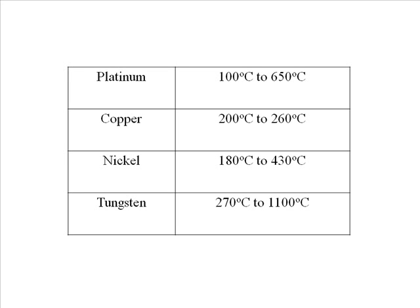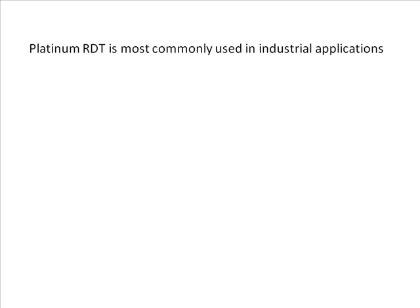And for tungsten it is from minus 270 to 1100 degrees centigrade. Among these metals, although platinum is most expensive, still platinum RTD is most commonly used in industrial applications as other metals mentioned here are not totally free from corrosion and oxidation.